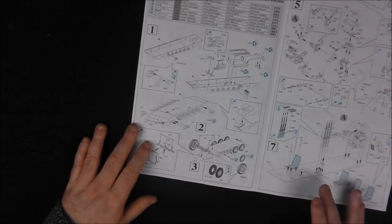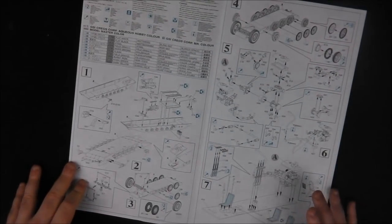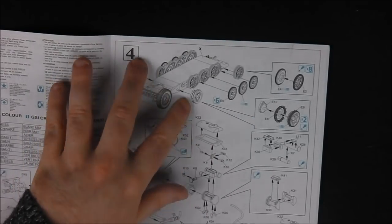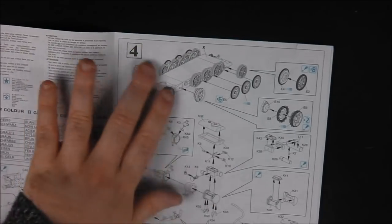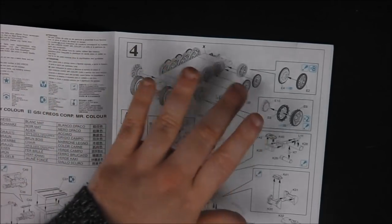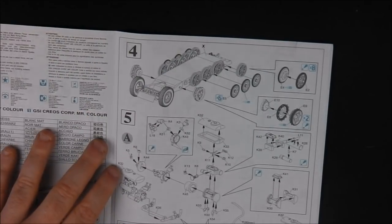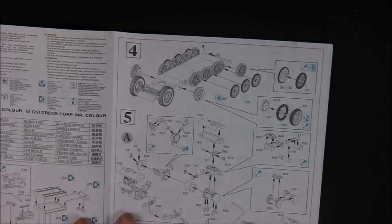On to step two and three, we're adding our idlers and our drive sprockets as well as the axles for the front wheels here. It's somewhat similar to the AFV Club kits and how these sections go together. Step four has us adding the road wheels. I tend to leave these off until after the painting process. I'll paint these separately and then mount them to the vehicle, just easier to get into all these details. Just make life easier.